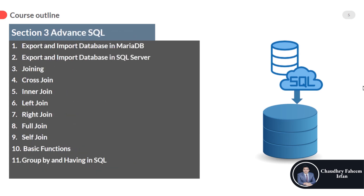The third section is about advanced SQL topics. This section has very easy and important topics like export and import of databases in MariaDB and SQL Server, joining and its types — cross join, inner join, left join, right join, full join, and self join — as well as basic aggregate functions in SQL, group by, and having in SQL.